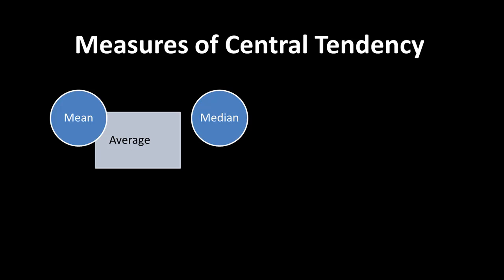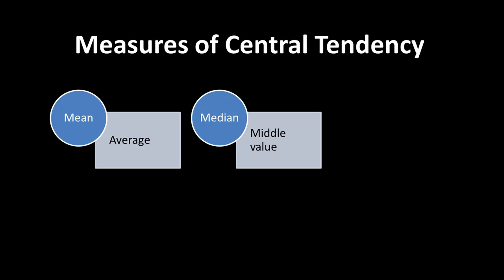Another important measure of central tendency is the median — the value that falls at the midpoint of the entire data range. You arrange all available data in order from lowest to highest and take the middle value. For example, take the heights of all students in a class, arrange them from lowest to highest, and take the middle value. That's the median. The median is many times a much better indicator of central tendency than the average.